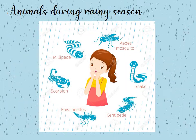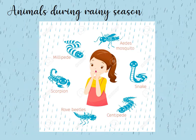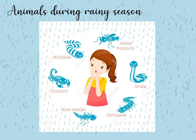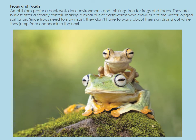What are the animals that we see during the rainy season? Frogs and toads are amphibians that prefer a cool, wet, dark environment, so they are busiest after steady rainfall. They come out to eat earthworms who crawl out of the waterlogged soil for air. Since frogs need to stay moist, they don't have to worry about their skin drying out while they jump from one snack to the other.